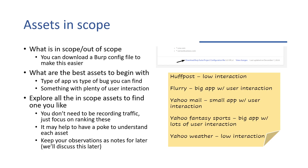You can download the Burp config file to make staying in scope easier — that's the first thing we want to consider. We want to make sure we're not going out of scope. And if we do interact with an out-of-scope domain, we're using it for recon, to better understand the app that is in scope, but we're not performing any security testing on it. HackerOne has the Burp configuration file that will put domains out of scope and won't record the traffic in Burp.